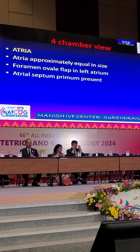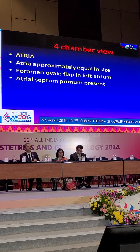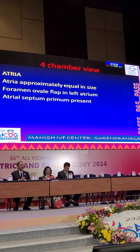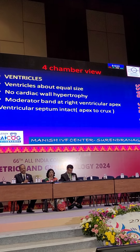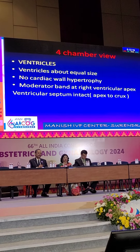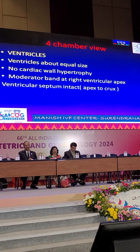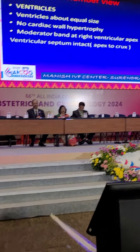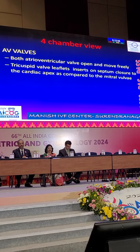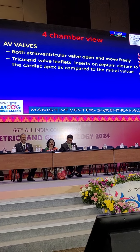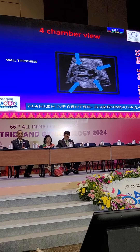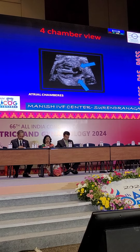In the atria, both atria should be of equal size. The atrial septum primum must be present and the foramen ovale flap opens into the left atrium. Both ventricles should be of equal size, without wall hypertrophy, with presence of the moderator band in the right ventricle and intact interventricular septum from apex to crux. Both valves — mitral and tricuspid — open and move freely, and there is a normal offset. No pericardial effusion with normal wall thickness.